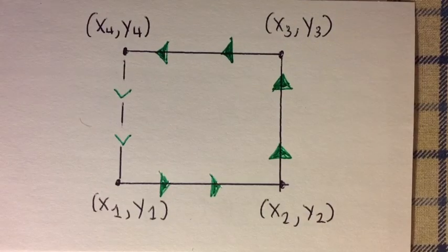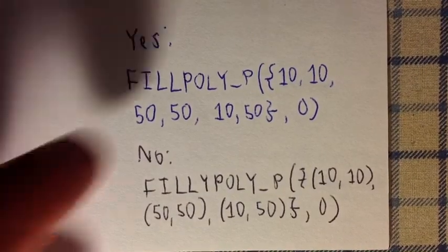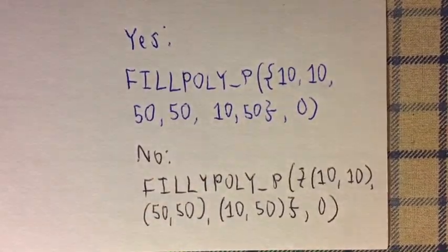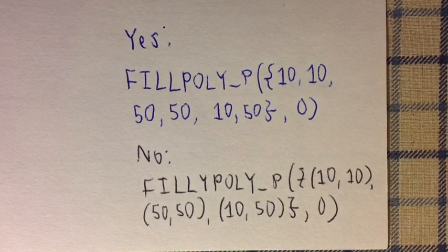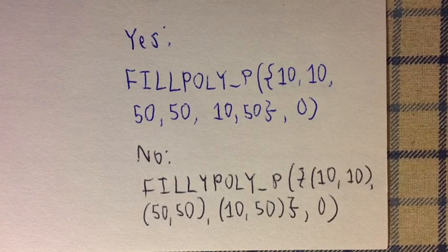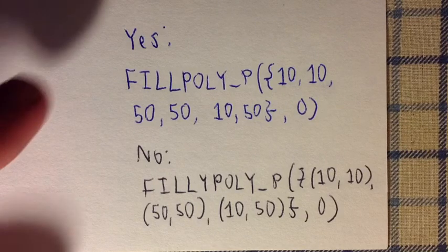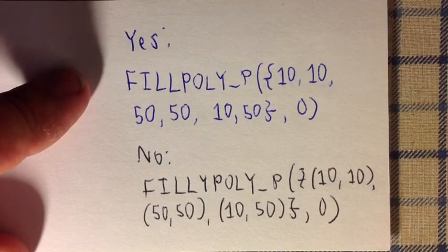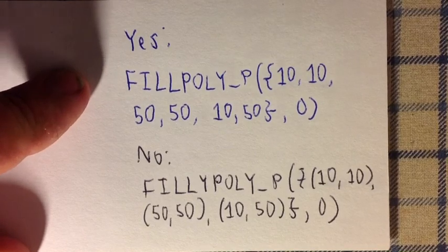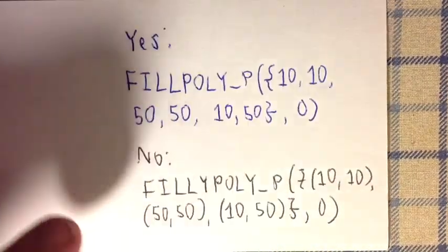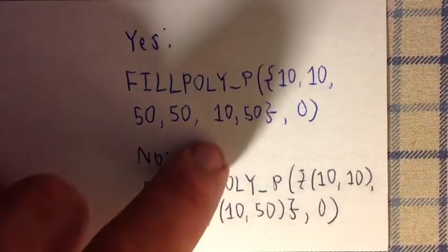Please note the format of the points argument. We're going to use one list of alternating x and y values. So for this example, FILLPOLY is going to draw a triangle, starting with one vertex, going to the next vertex, going to the next vertex.